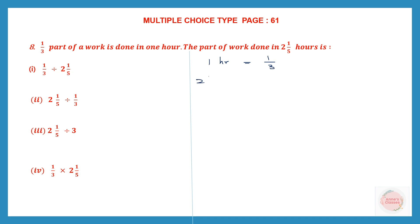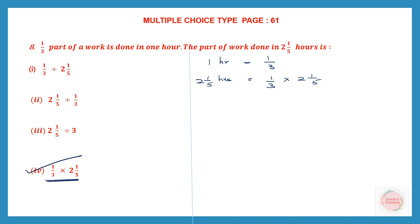In 2⅕ hours, how much work will be done? It will be 1/3 into 2⅕. In 1 hour, one-third is done, so in 2⅕ hours it will be 1/3 into 2⅕. That gives us option 4, which is the correct answer.